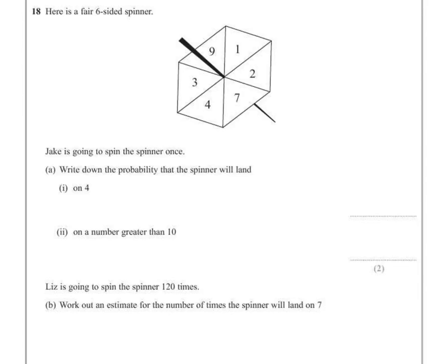Question 18. Here is a fair six-sided spinner with the numbers 1, 2, 7, 4, 3 and 9.